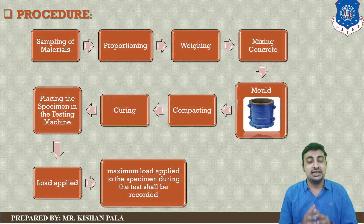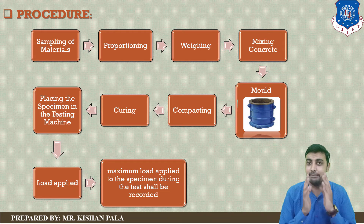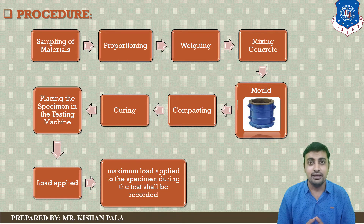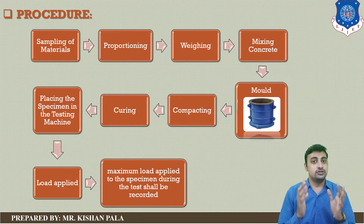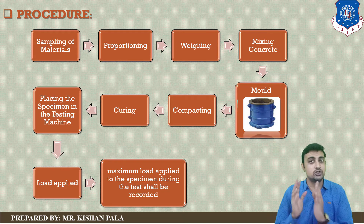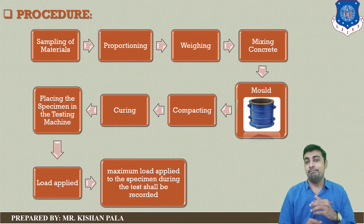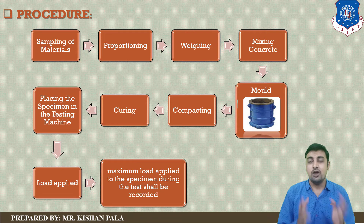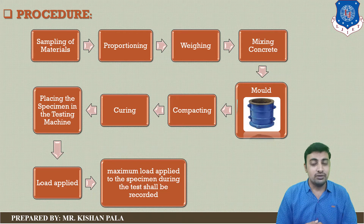Let us discuss the procedure to find out the tensile strength of the concrete mass. First of all, you have to prepare the concrete mix as per your requirement, like M20, M25, M30, or M35, depending on your site requirements. You have to finalize the proportion of ingredients like cement, fine aggregates, coarse aggregates, and water, and carry out proper weighing and batching. Mix by hand or machine mixing for at least two to three minutes.